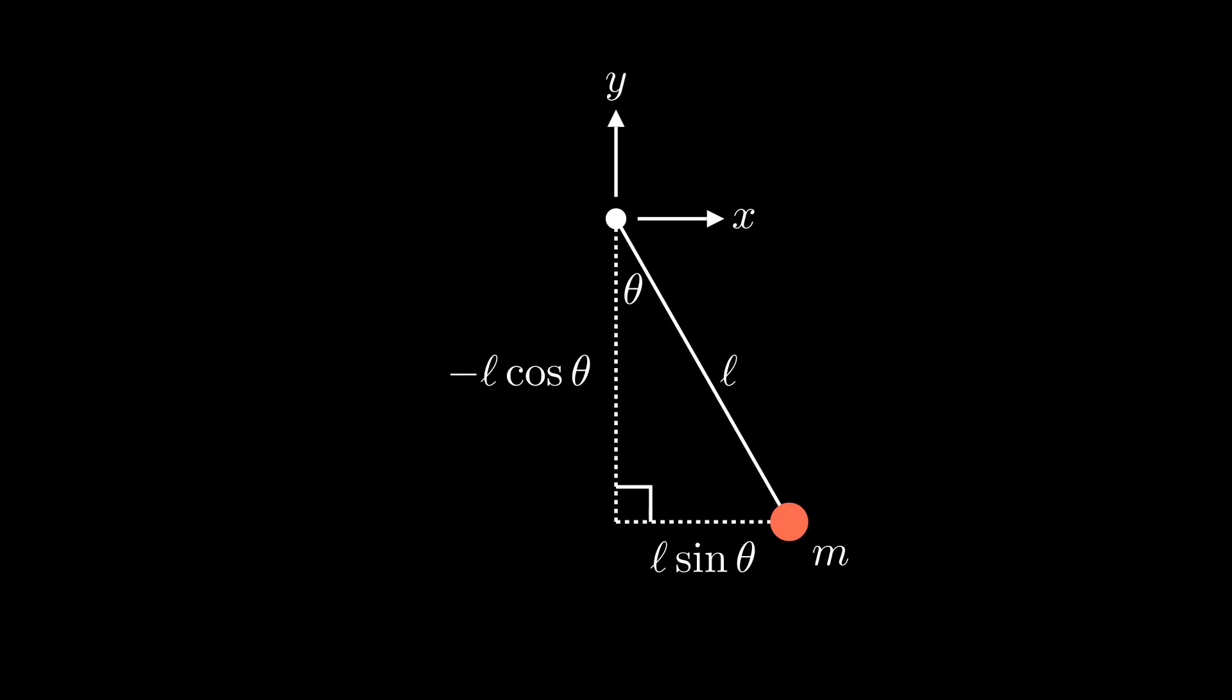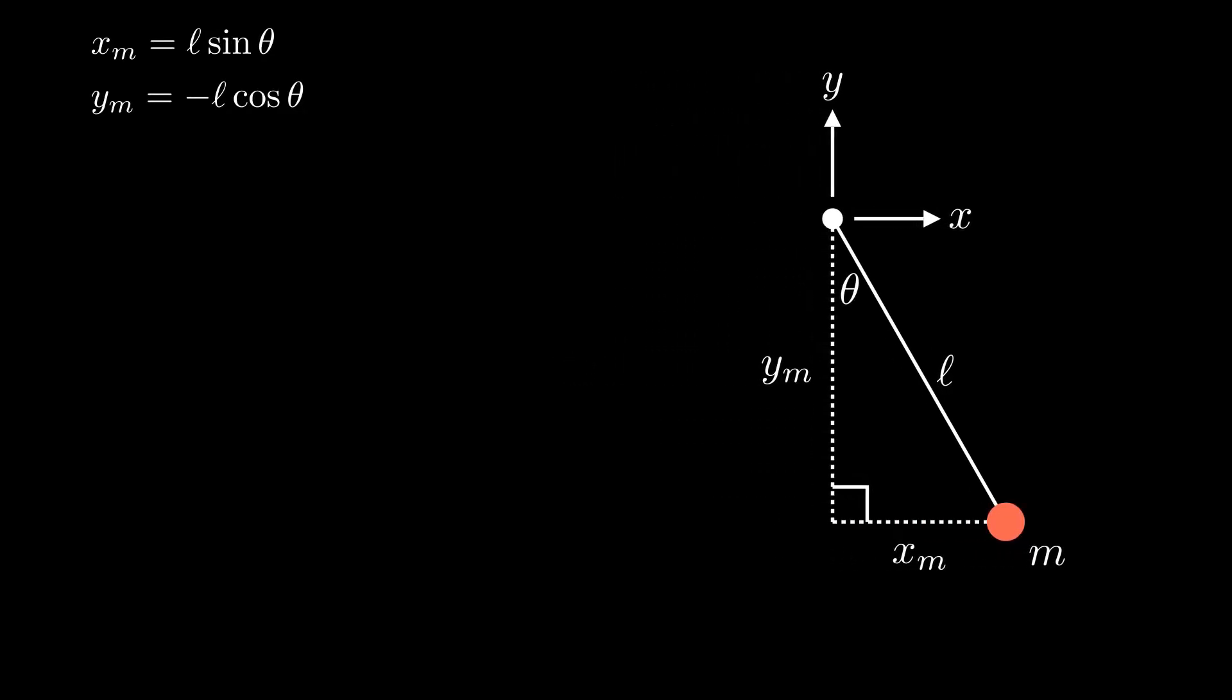Let's set these equations aside, because we'll need them later. Also, let's take derivatives with respect to t, as that will be useful. Keep in mind that theta is a function of time, so when we do these derivatives, we need to use the chain rule.